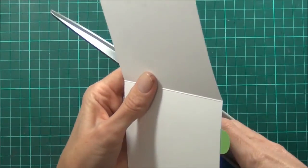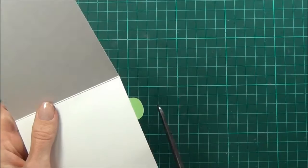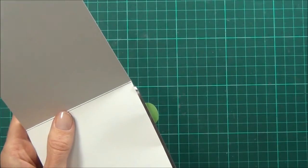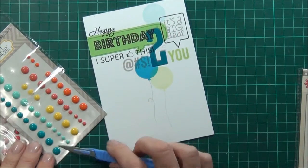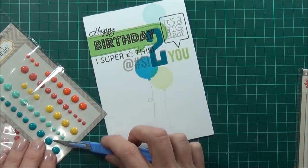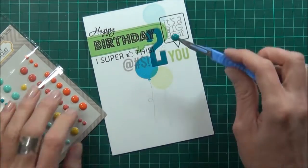I'll simply just flip this over and cut the end of this die cut that's sitting outside. I thought I might just add a couple of little enamel dots.